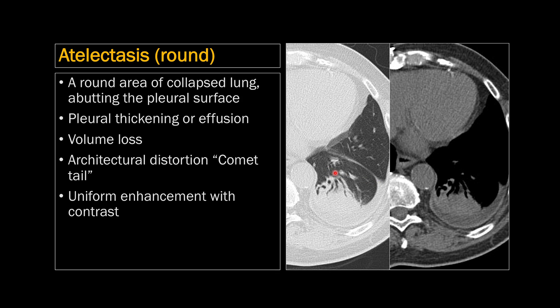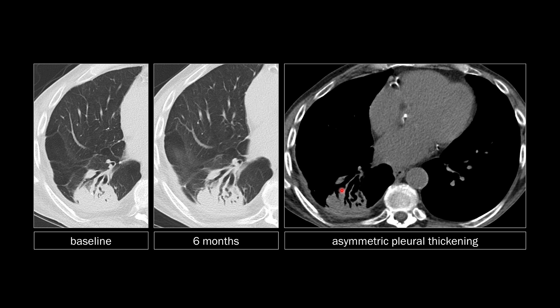The fourth sign is the comet tail — a swirling of vessels and bronchi leading into the atelectatic lung. A helpful additional sign: with contrast on board, atelectasis will enhance uniformly, as opposed to pneumonia which enhances heterogeneously. Here's another example where at baseline and six months later this rounded area of opacity was unchanged, and you can see the pleura is abnormal with pleural thickening and thickening of the extrapleural fat compared to the other side.